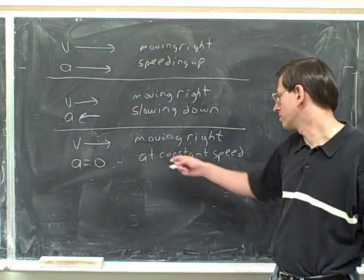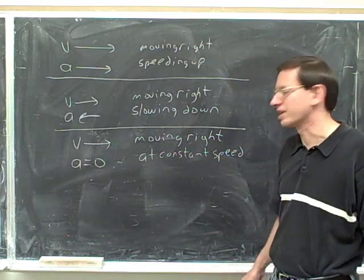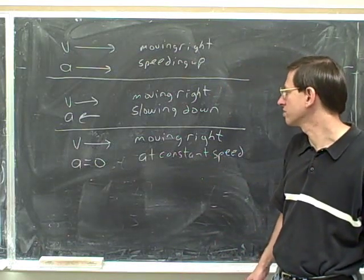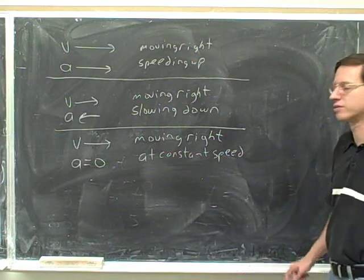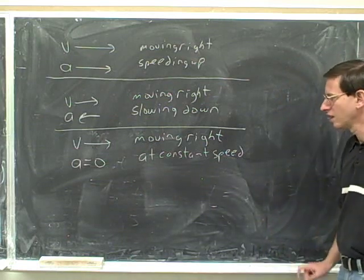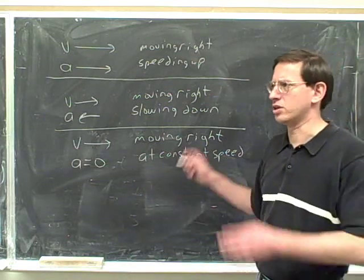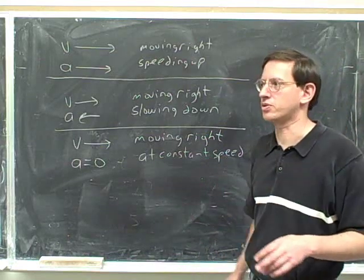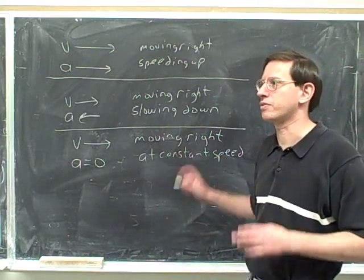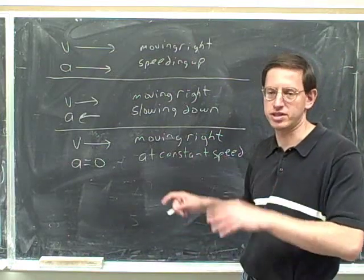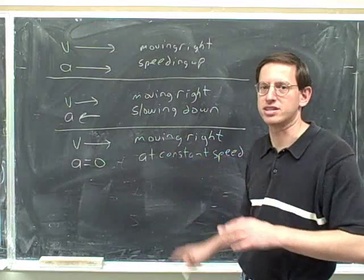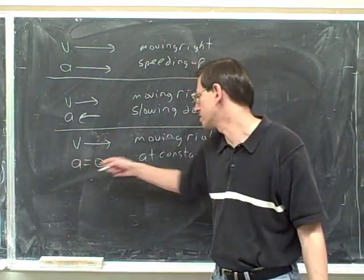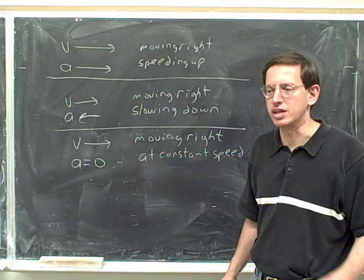An acceleration of zero means that you're moving at constant speed. This is something you really should already be familiar with if you're at any distance into your physics course. If this was not totally obvious to you, you want to make some clear notes and practice this idea. It's crucial to know that when the acceleration is zero, you're moving at constant speed.